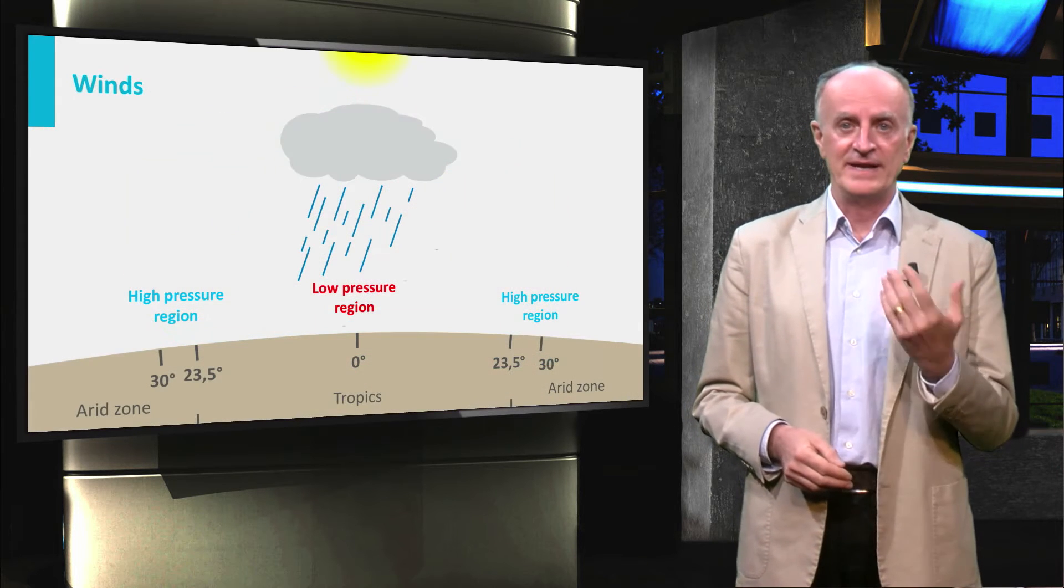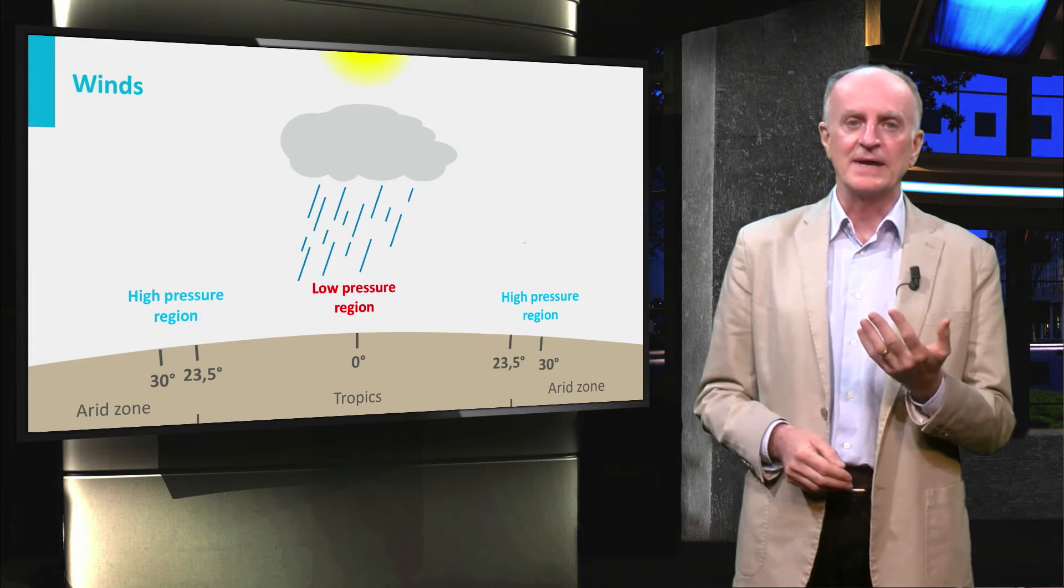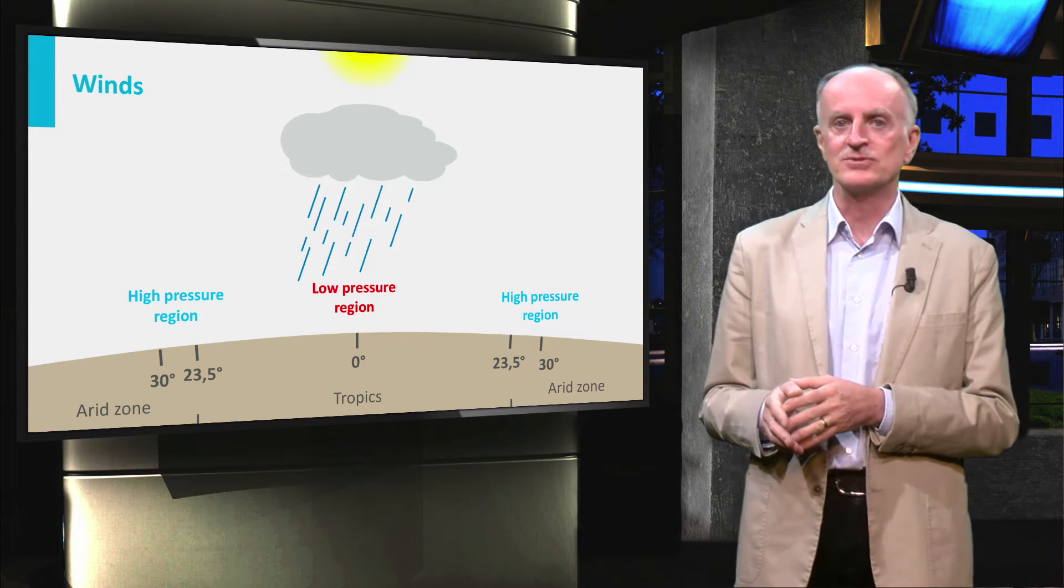Winds are another first order component of the climate system. Among many other functions, they carry energy, water vapor, and exert a first order control on precipitations.